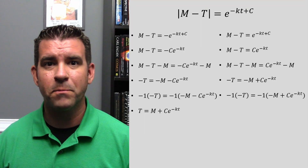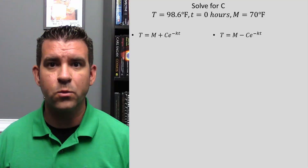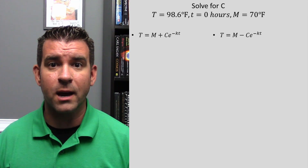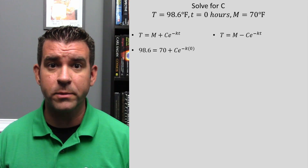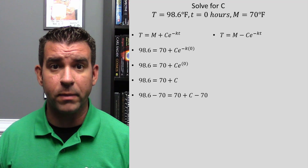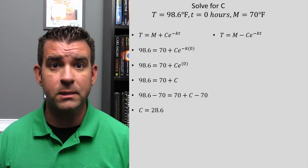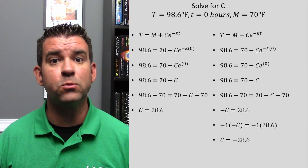Now we do the same thing on the right side — exponent rule, subtract, multiply by negative 1. We have solved for T, but we still have two variables we do not know: C and K. It is easier to solve for C first because we know the body temperature at the time of death: 98.6 degrees at time t = 0, and room temperature of 70 degrees. We plug those numbers in. Anything multiplied by zero is zero, and anything raised to the zeroth power is 1. Subtract 70 from both sides and we get C equals 28.6. Doing the same on the right side gives C equals negative 28.6.